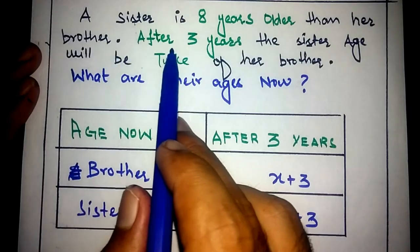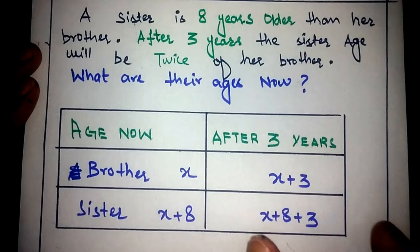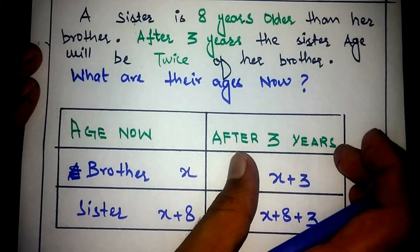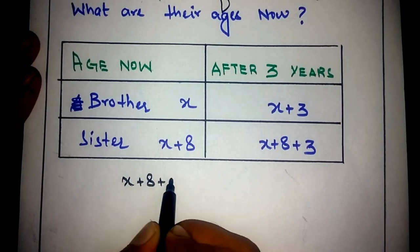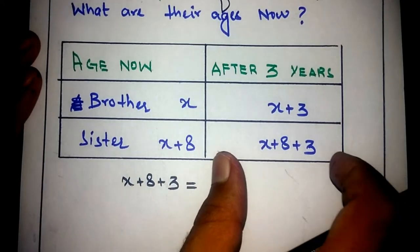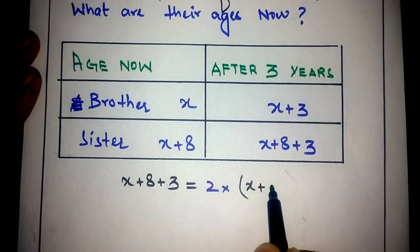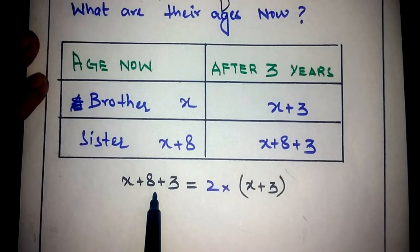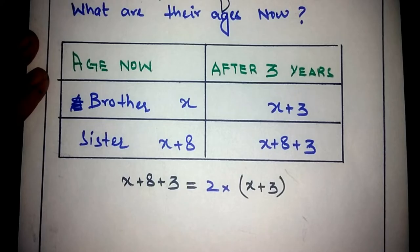The next step: after three years, the sister's age will be twice her brother's age. So after three years, the sister's age is X plus 11 and the brother's age is X plus 3, and the sister's age is twice the brother's age. Now just solve for the value of X.